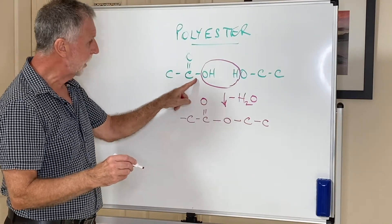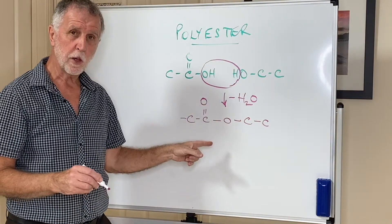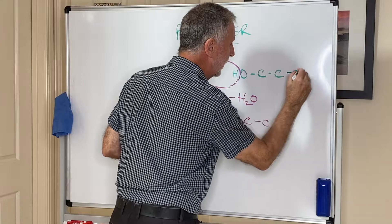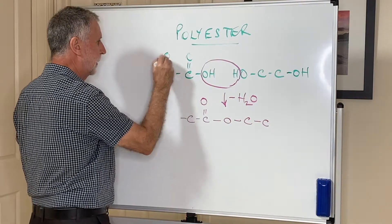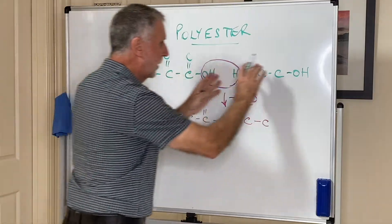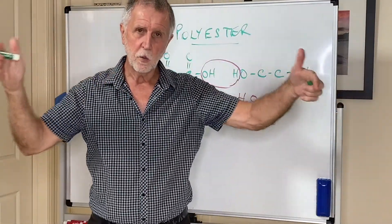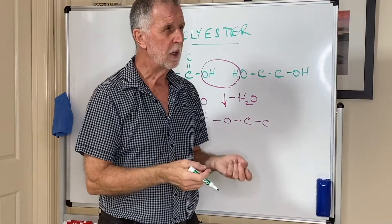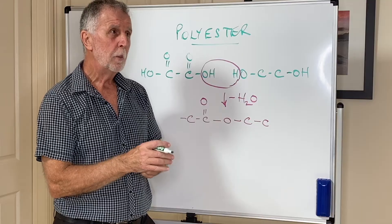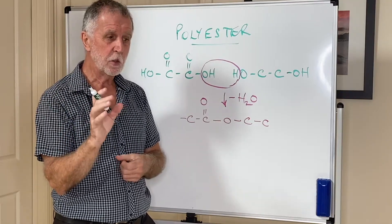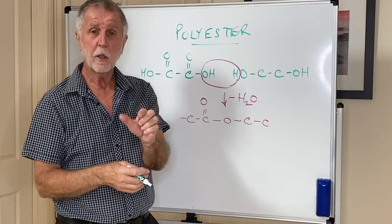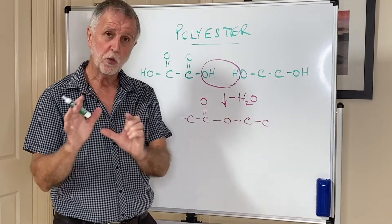If there is only one carboxylic acid group and one alcohol group, the reaction stops there. So if you want to form a polyester, you need an alcohol group on either end and a carboxylic acid group on either end. Now this can form another ester this way, and that way, and this can keep going to create a polyester. Probably the most common example is terylene, used for clothing. Polyethylene terephthalate — PET — is another one, used in clear plastic drink bottles like common water bottles. Both of those are condensation polymers.